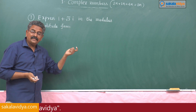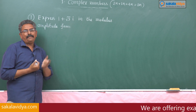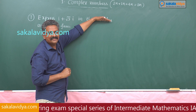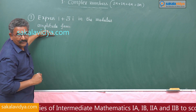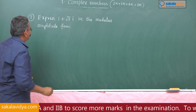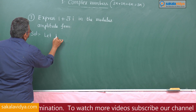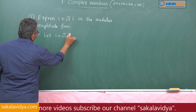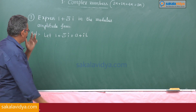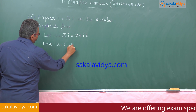To convert this Cartesian form into the trigonometric or polar or modulus-amplitude form, first we find the modulus, then we find the amplitude. Let 1 plus root 3 i equal a plus ib, where a equals 1 and b equals root 3.